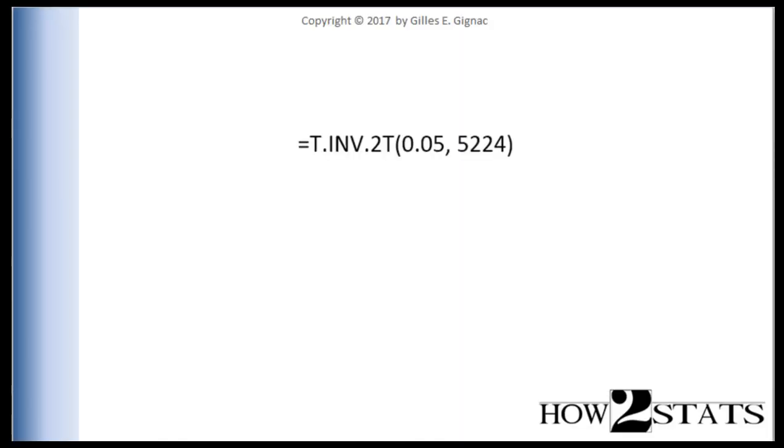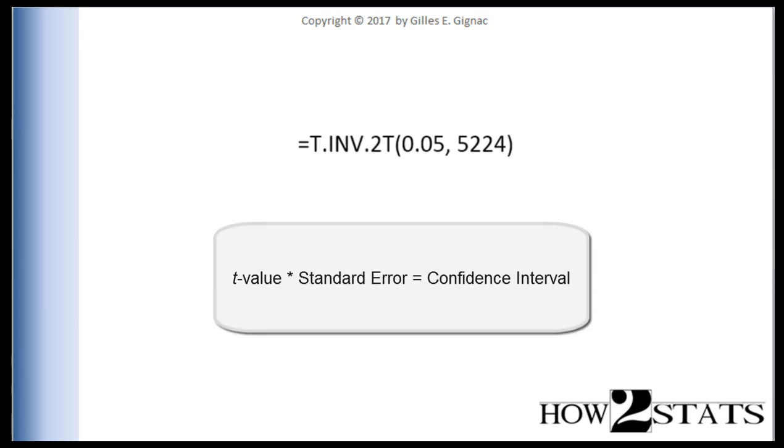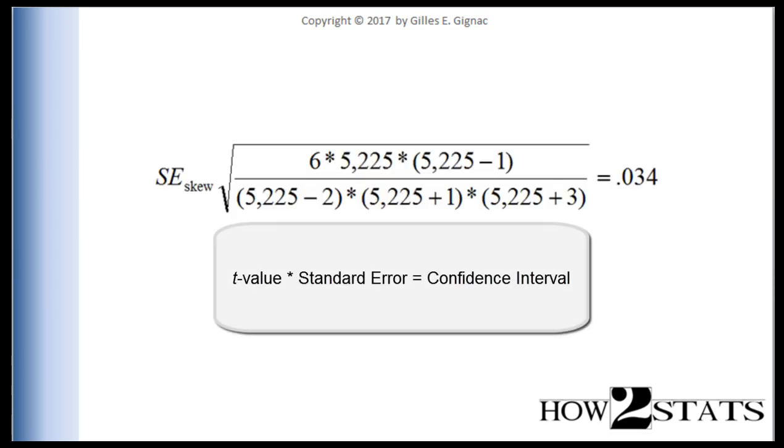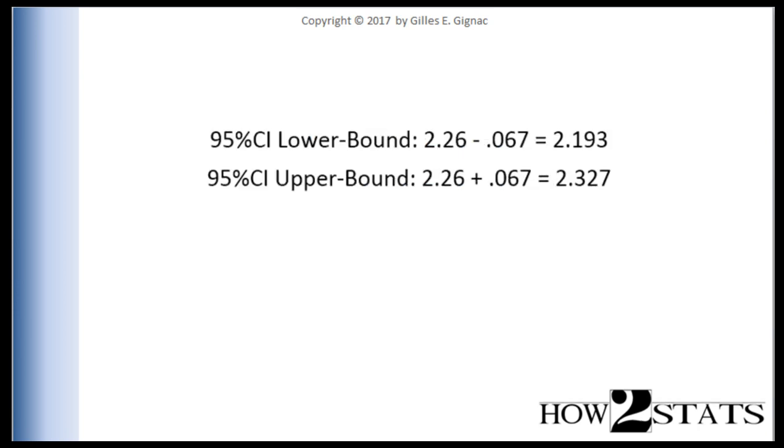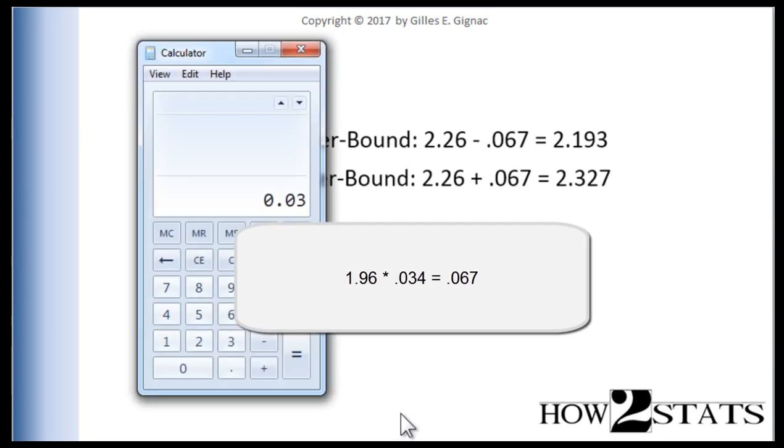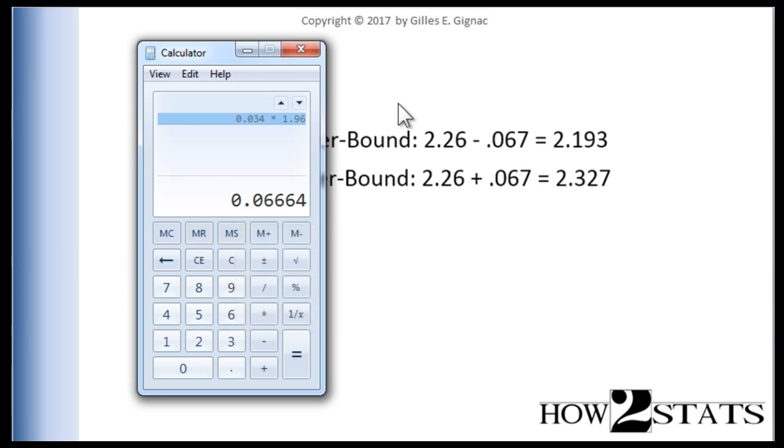So that's where I got the value to multiply the standard error, which was .034. I multiplied that by 1.96 because that's what I got from this Excel function. And when I multiplied 1.96, I ended up getting .067 rounded.